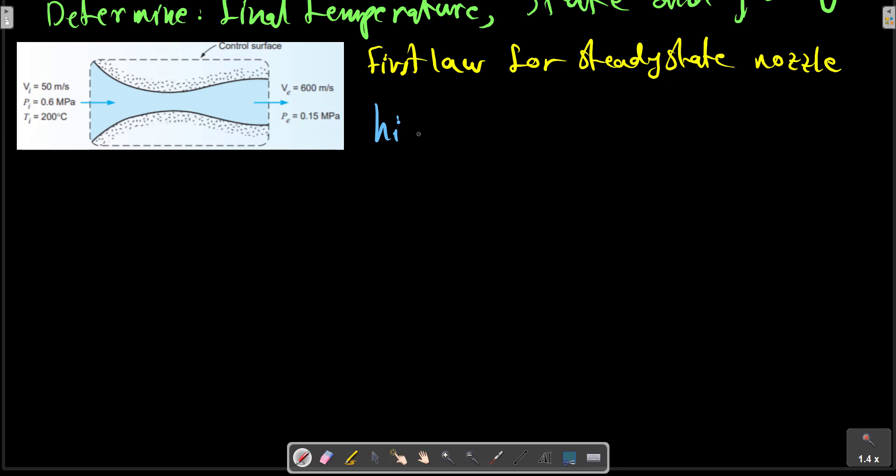There is no work and no heat transfer because of high speed flow. We know the velocities for the inlet position. We have V_i.